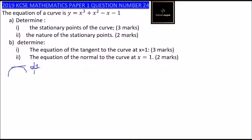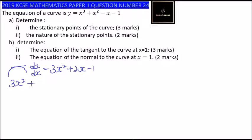So dy/dx equals 3x squared plus 2x minus 1. That is the gradient. To get the stationary points, the gradient is 0 at the turning point, so we equate 3x squared plus 2x minus 1 equals 0. This is a quadratic equation.